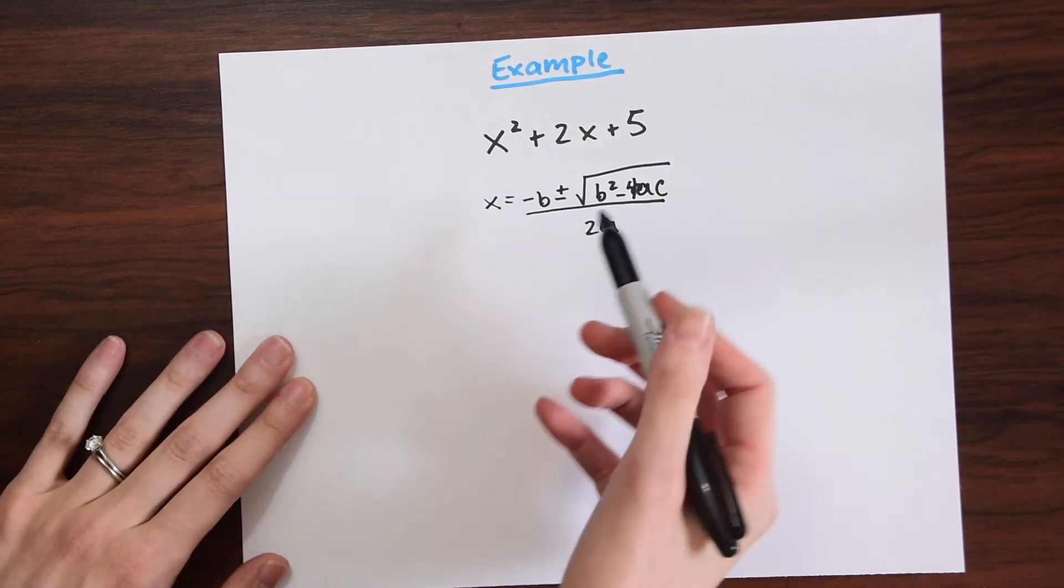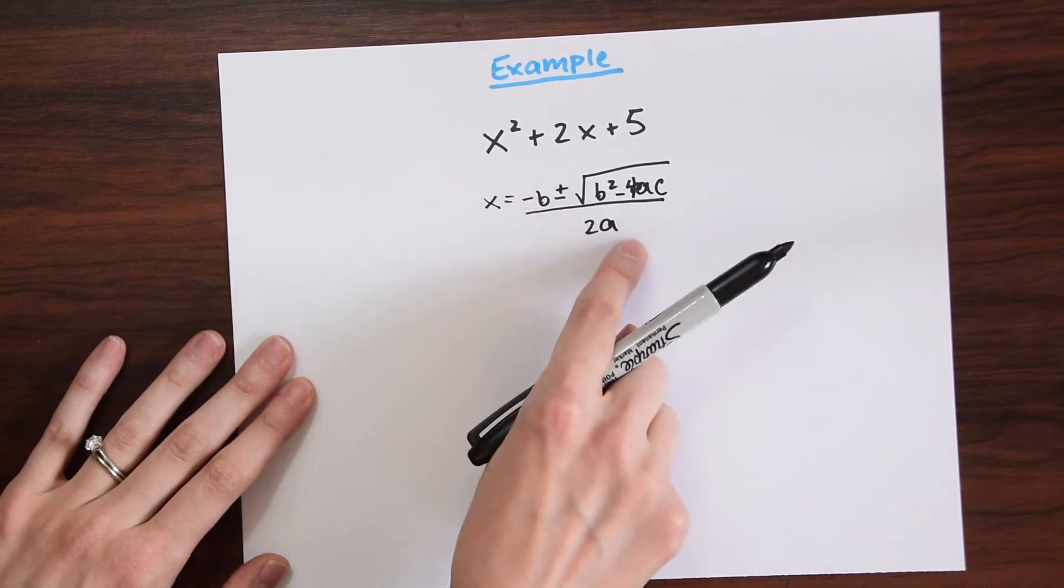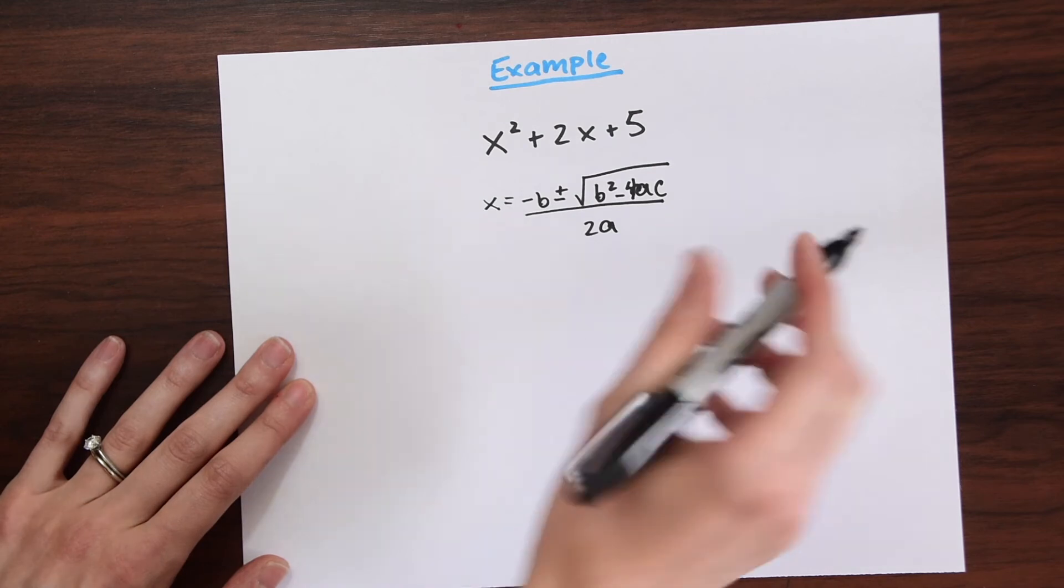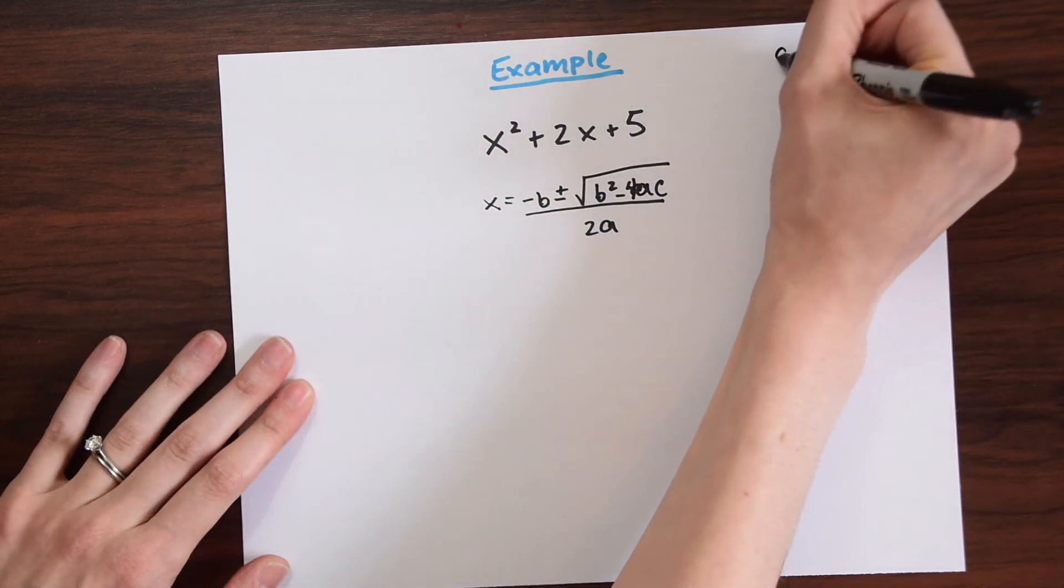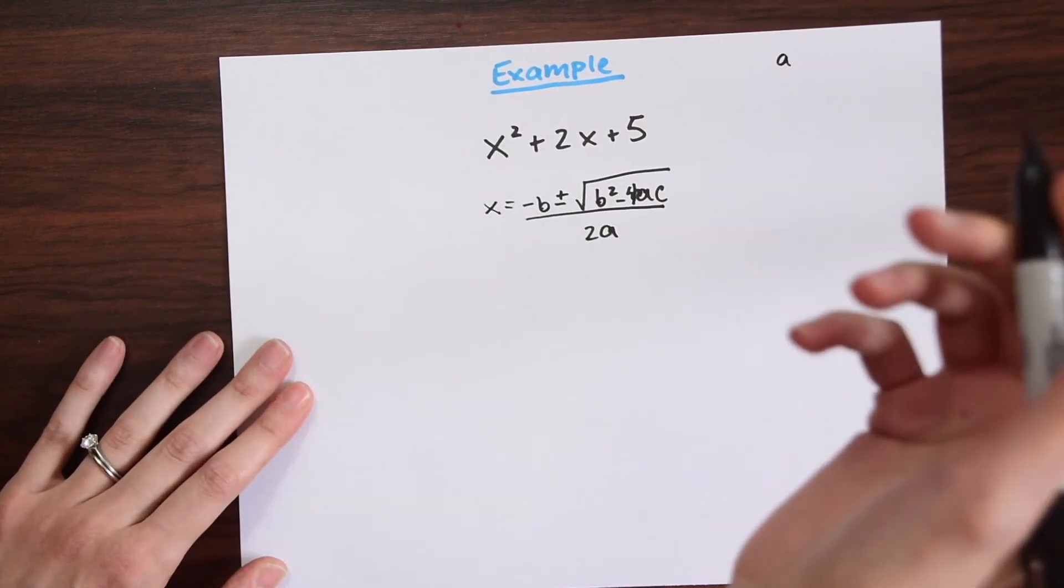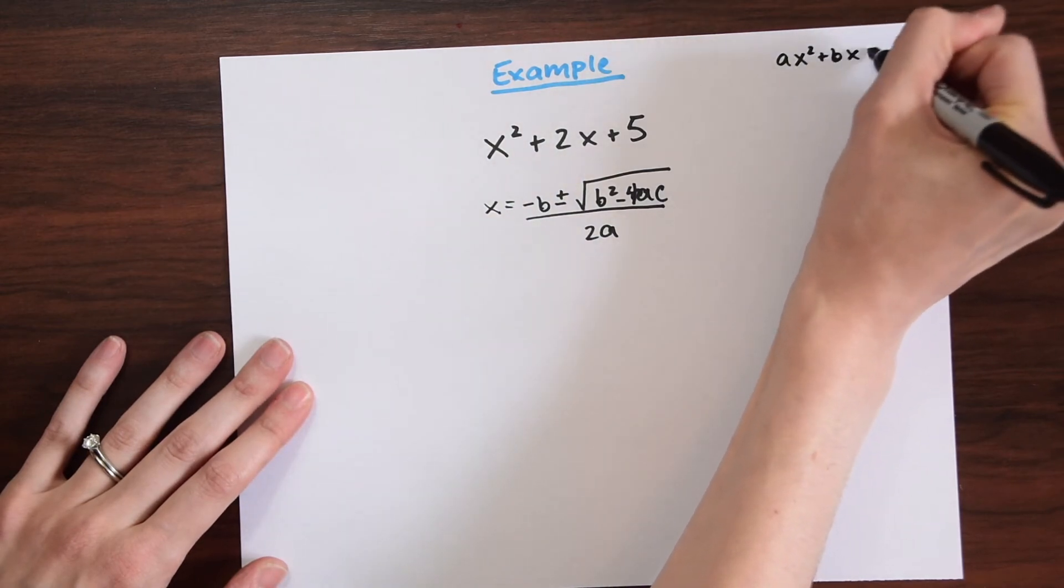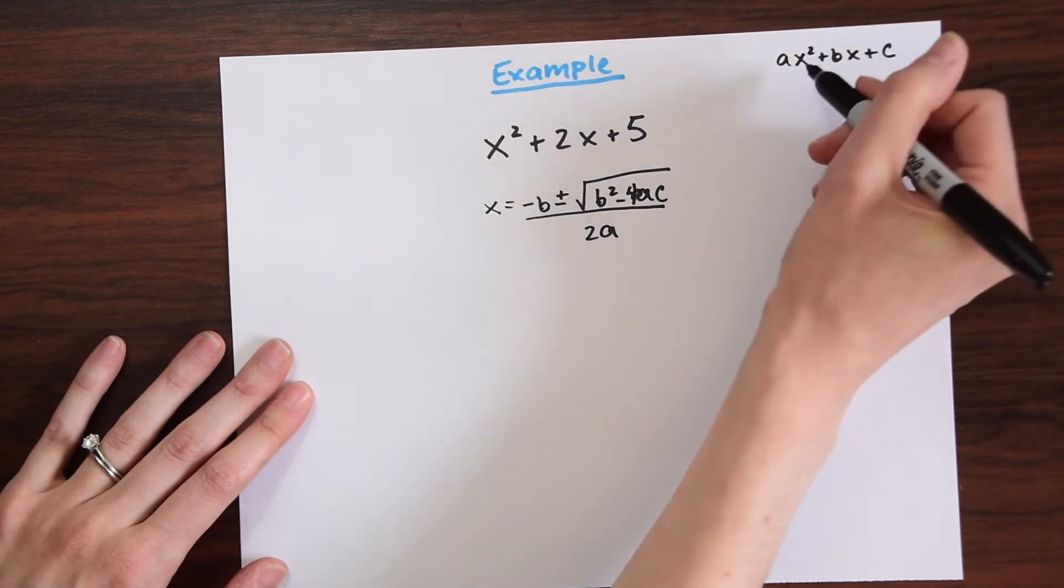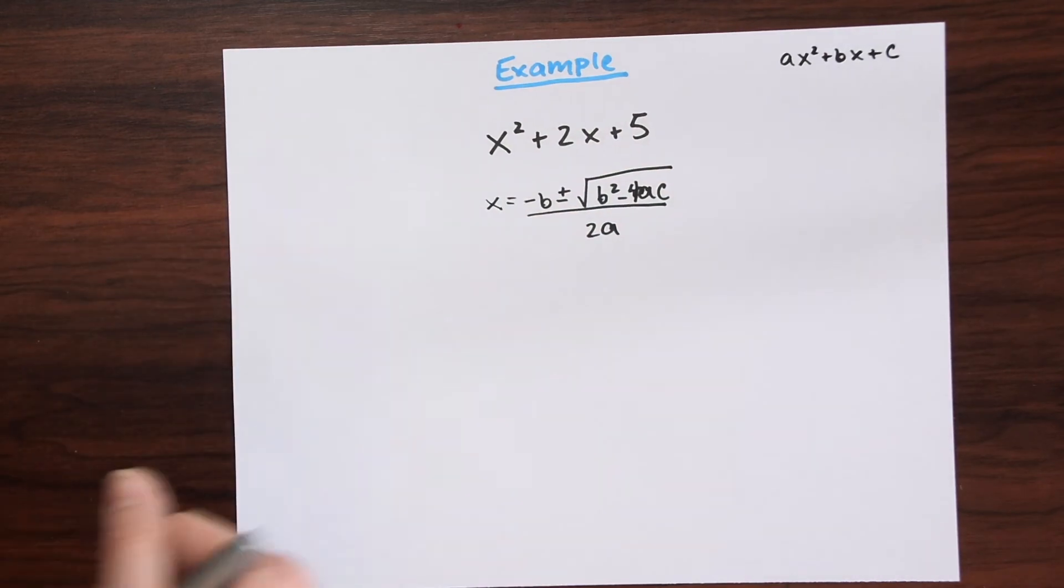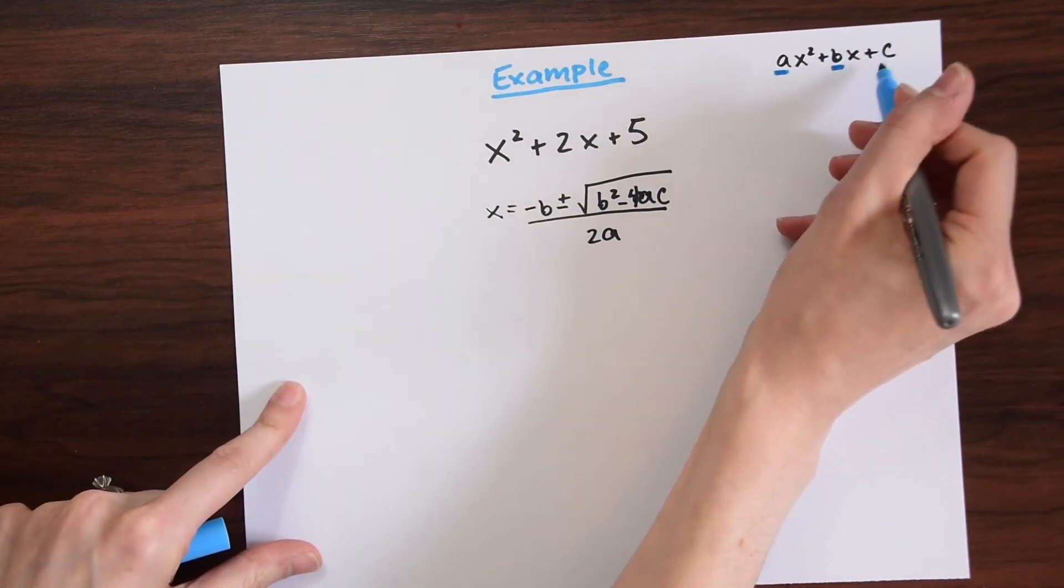The first thing we're going to want to do is identify the coefficients. That's what a, b, and c represent. Just a reminder of where that comes from. That comes from the quadratic equation in standard form: ax squared plus bx plus c. We have these a, b, c's. These are the coefficients.